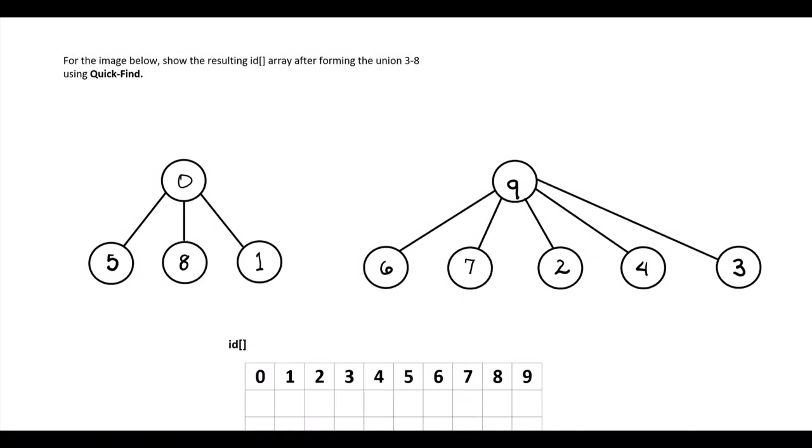So for this problem we are asked to apply the quick find algorithm. In this class of algorithms that we've been calling union find algorithms, working on these disjoint sets or separate sets, how do we keep track of who's connected to whom?